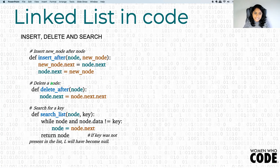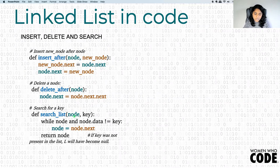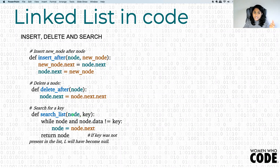Now we have seen insert and delete functions. Let's look at the third function: search. I'm given a node — let's assume it's the head node of the linked list — and a value that is the key. I have to check which node's value matches the key. This is an example of linked list traversal — how do you traverse through a linked list?